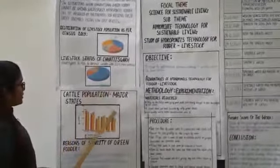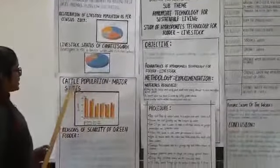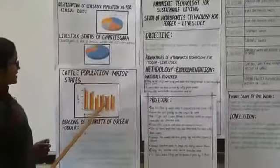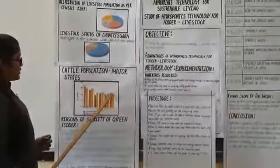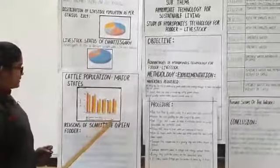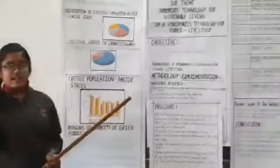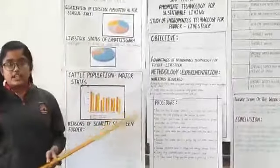Now according to this bar graph, the cattle population in Chhattisgarh is 9.8 to 10 million from 2012 to 2019. So cattle are increasing but green fodder is decreasing.